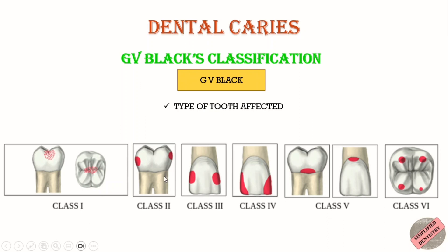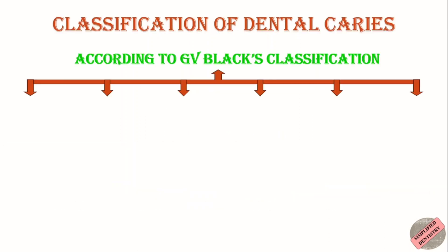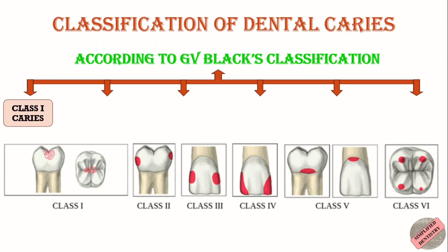It is also based on the location of the lesion, that is the surface of the tooth involved. This can include the lingual surface, buccal surface, occlusal surface, or proximal surface. The classification of dental caries is of six types: Class 1, Class 2, Class 3, Class 4, Class 5, and Class 6.